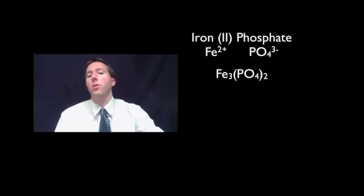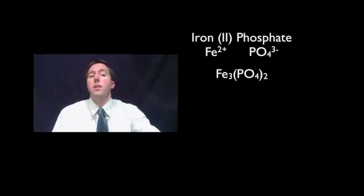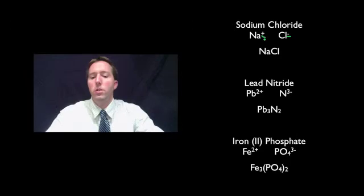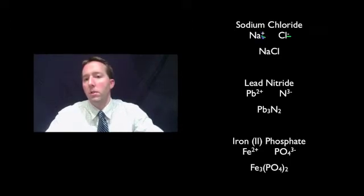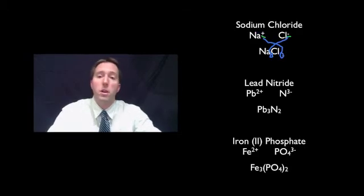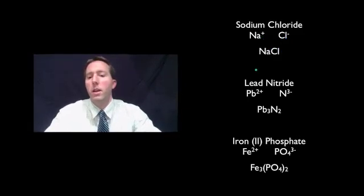Here's a trick for using electrovalencies to figure out the correct ionic formula. For sodium chloride: sodium has a charge of +1 and chlorine has a charge of -1. You take the number from one ion's charge and place it as the subscript for the other ion. Since both charges are 1, there's no subscript needed on either side, giving simply NaCl.